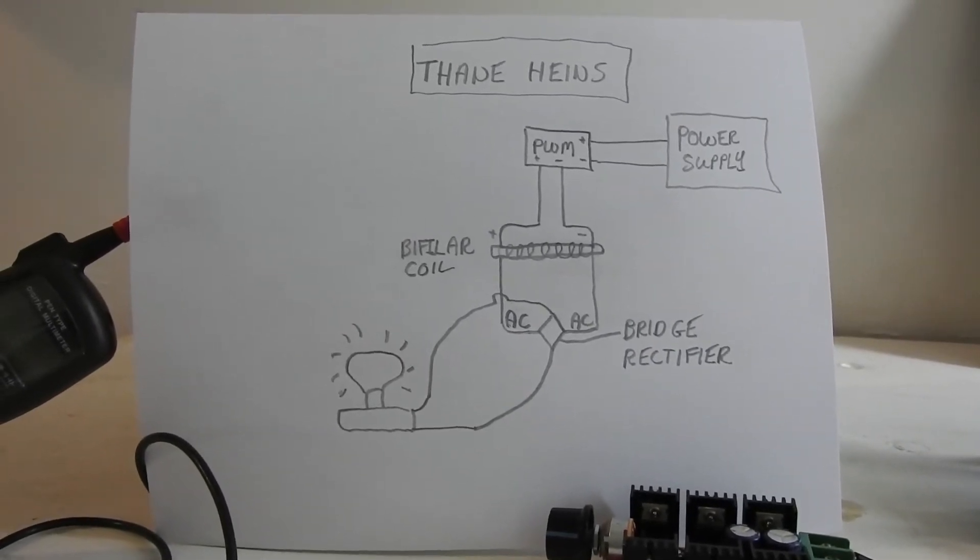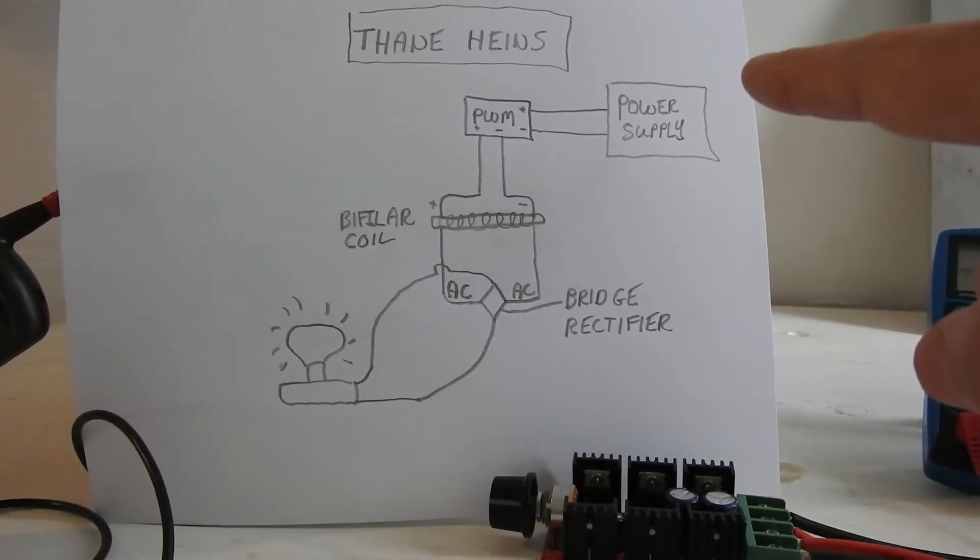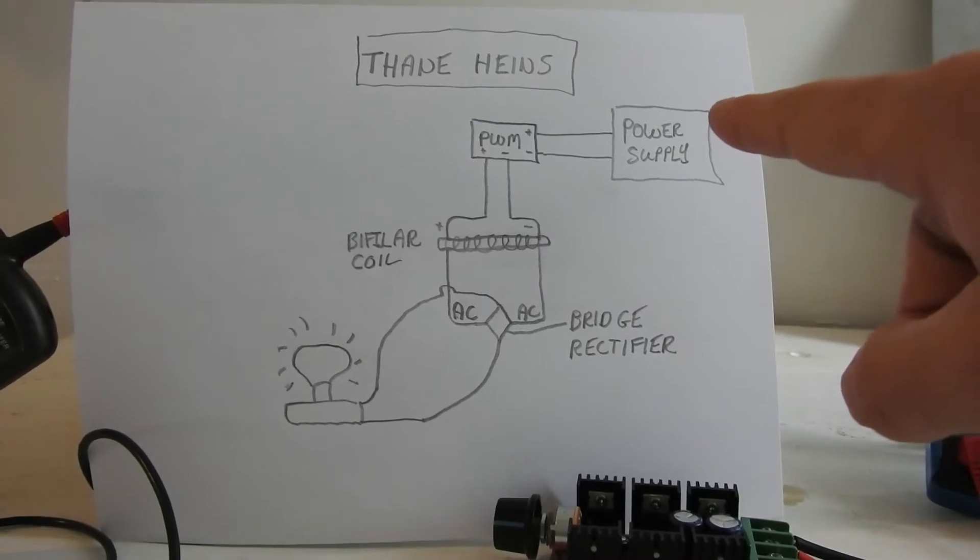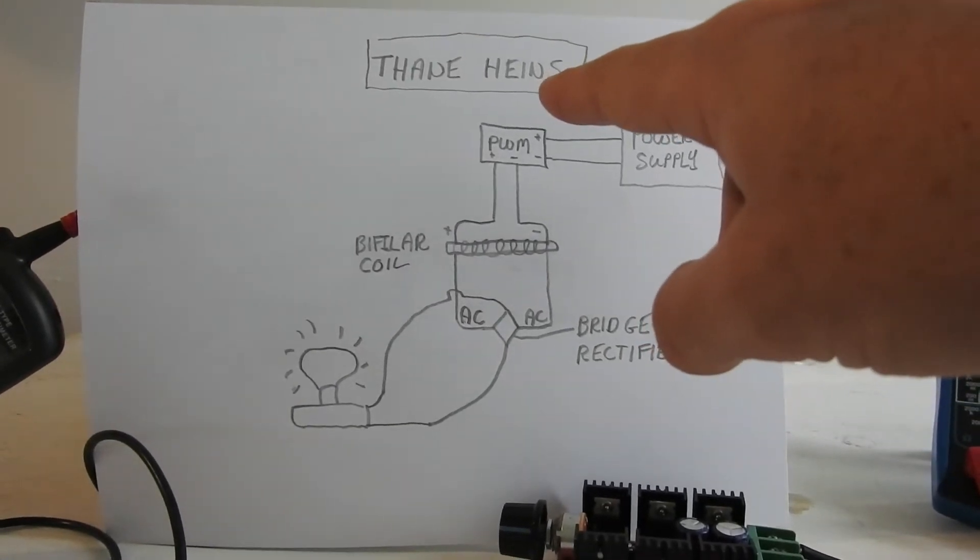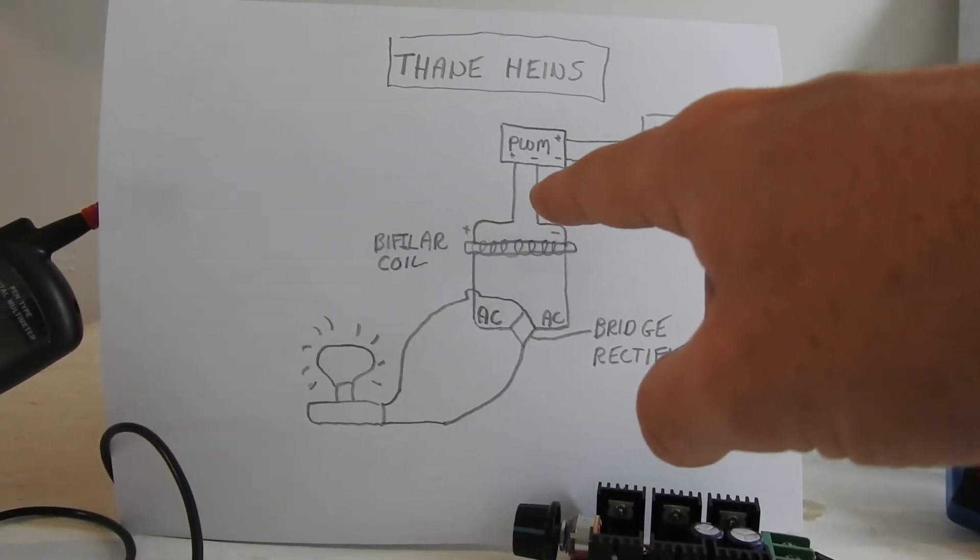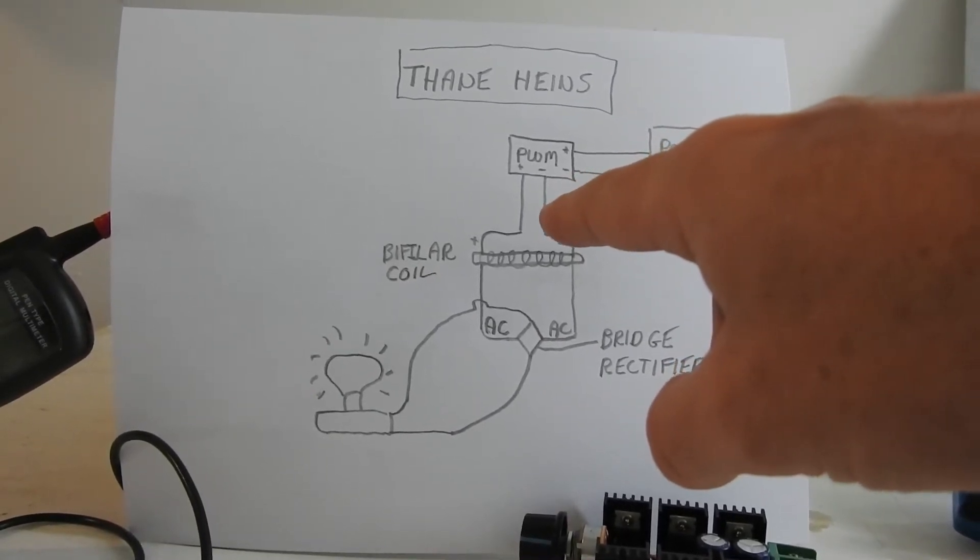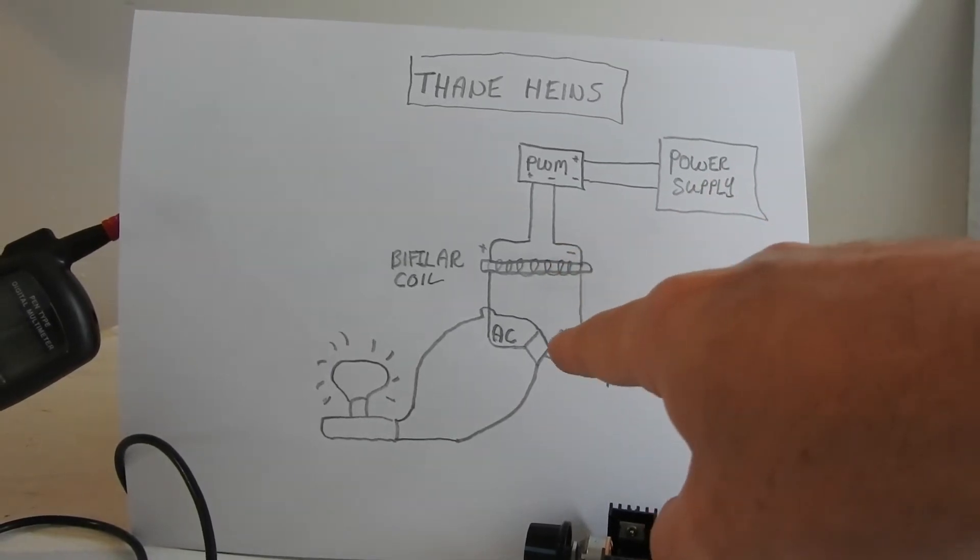So basically I've got the power supply which is the battery charger going into the PWM. The PWM is going into one side of my bifiler coil which is acting like a transformer. The other side of the bifiler coil is coming out and going into a bridge rectifier.